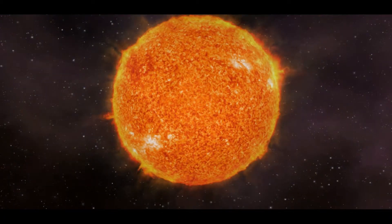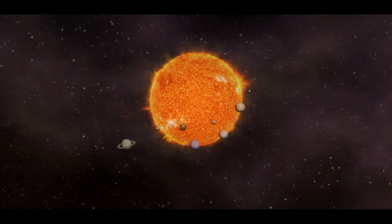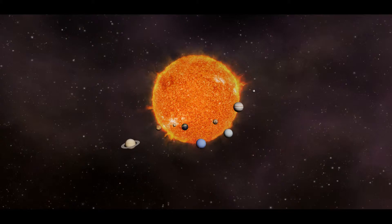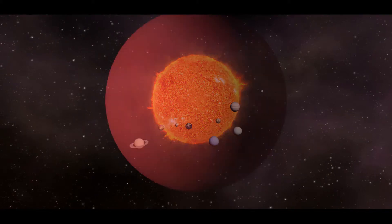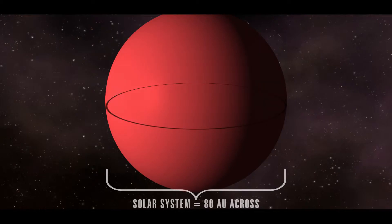Picture our solar system as a sphere, 80 astronomical units across, with the sun at its center, including the eight planets, Pluto, and every other object that orbits the sun.